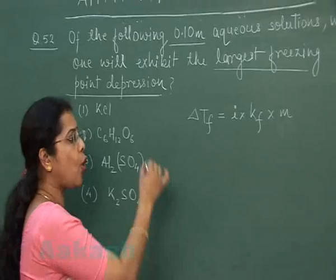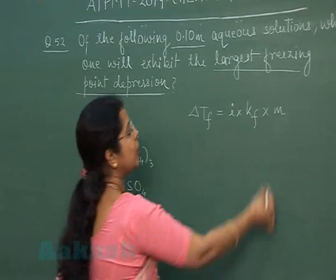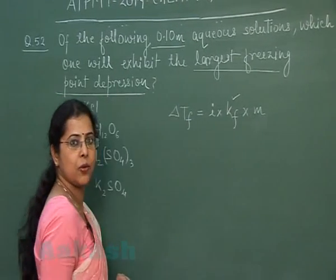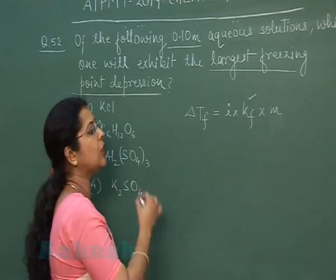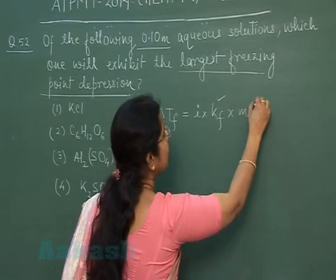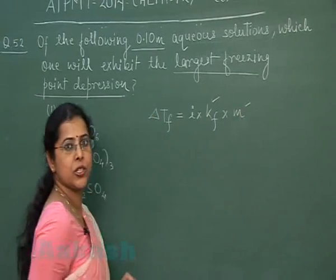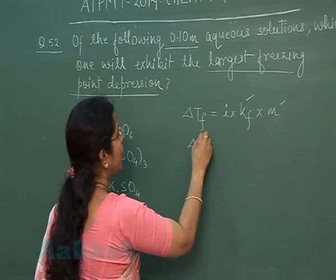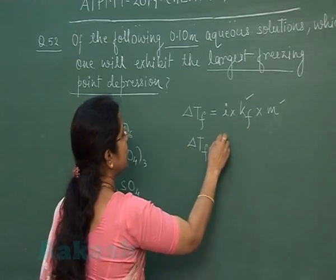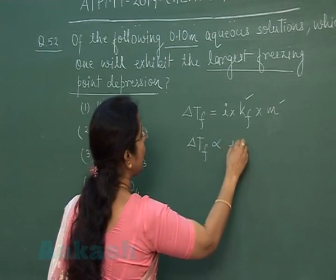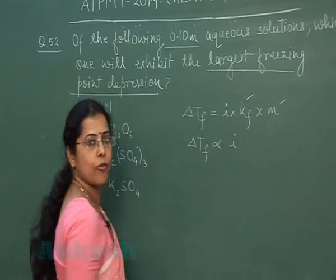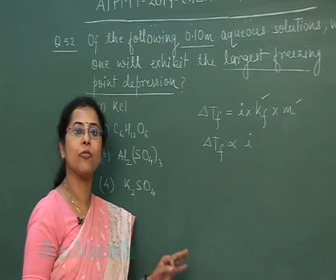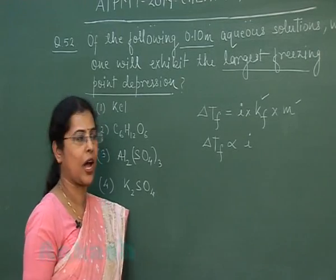For all these solutions, the value of Kf will remain the same, and the molality will also remain the same. Therefore, the depression in freezing point depends upon the van't Hoff factor i. So we need to check the value of i for each option.